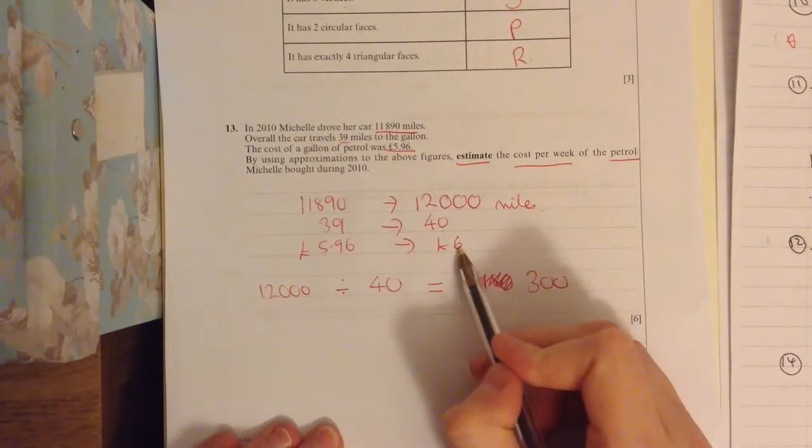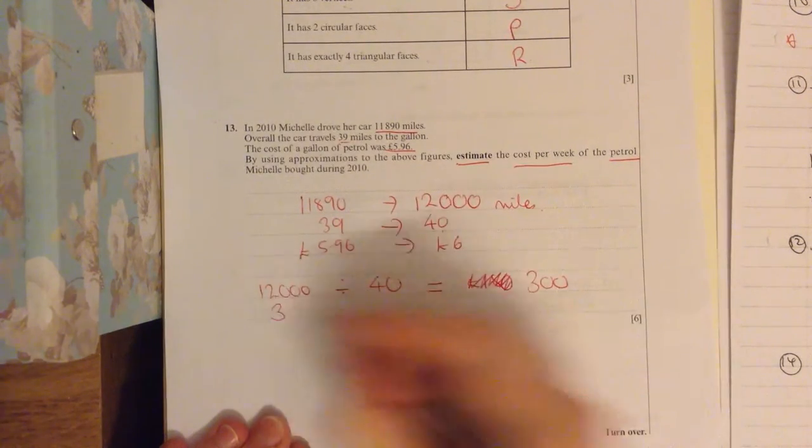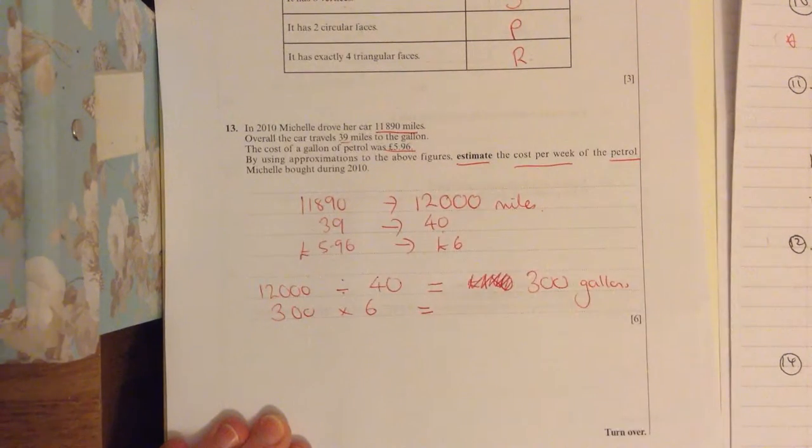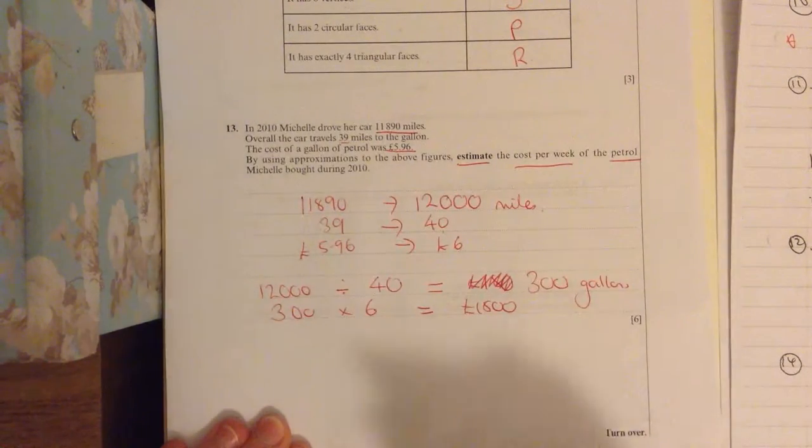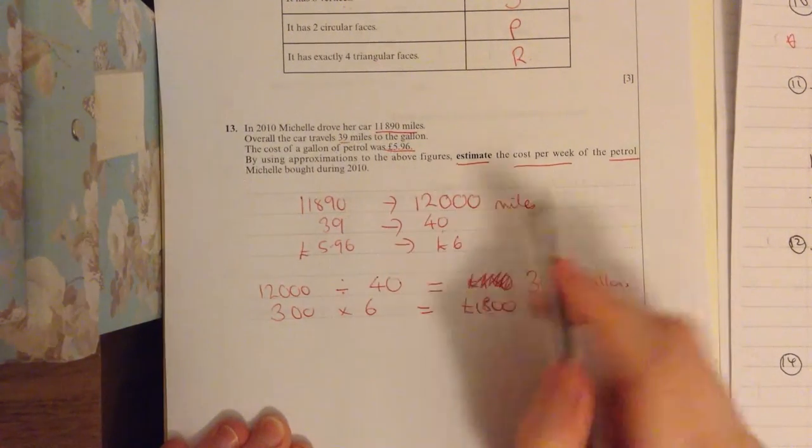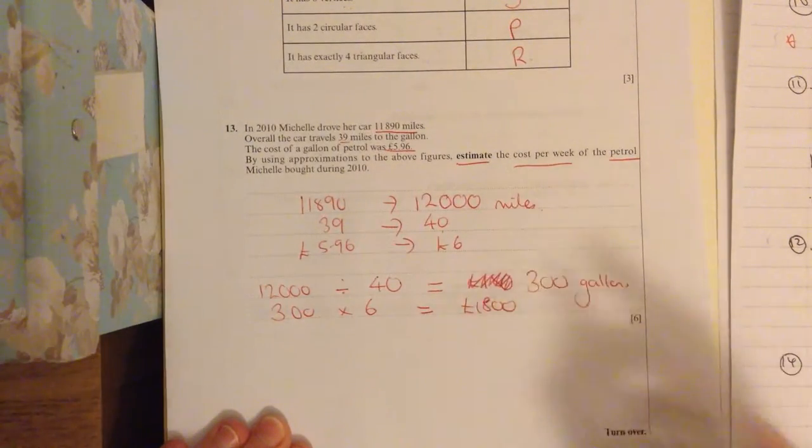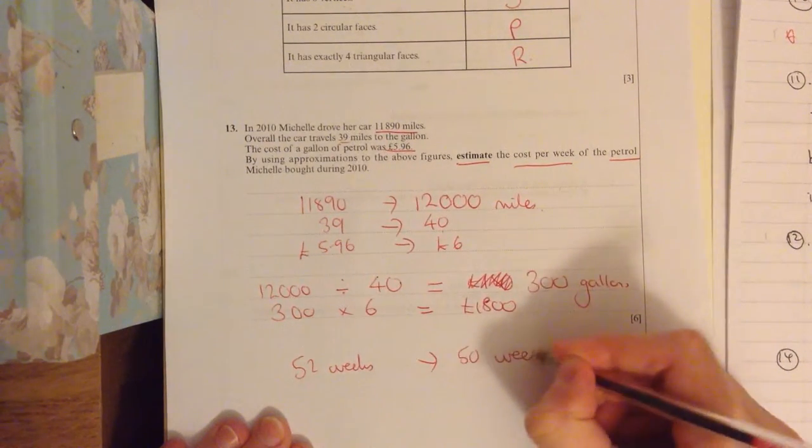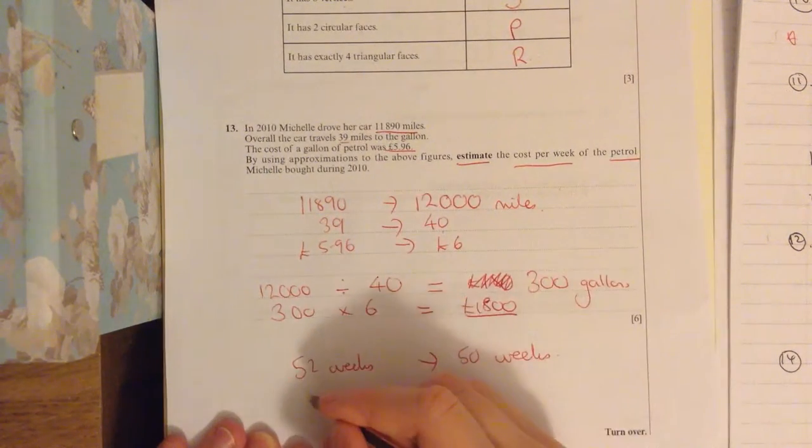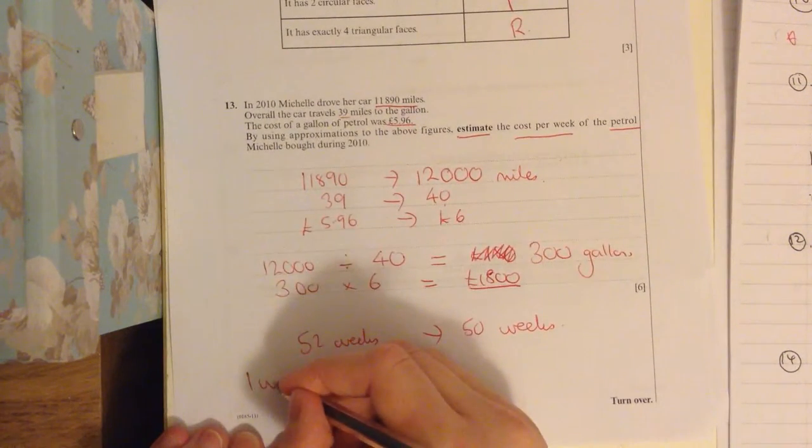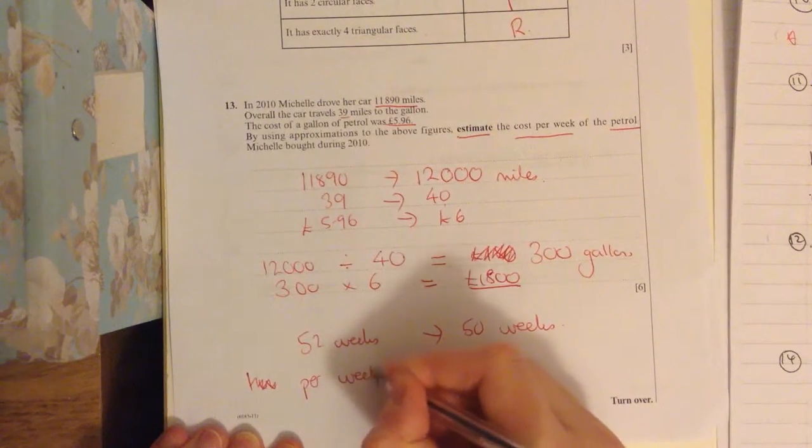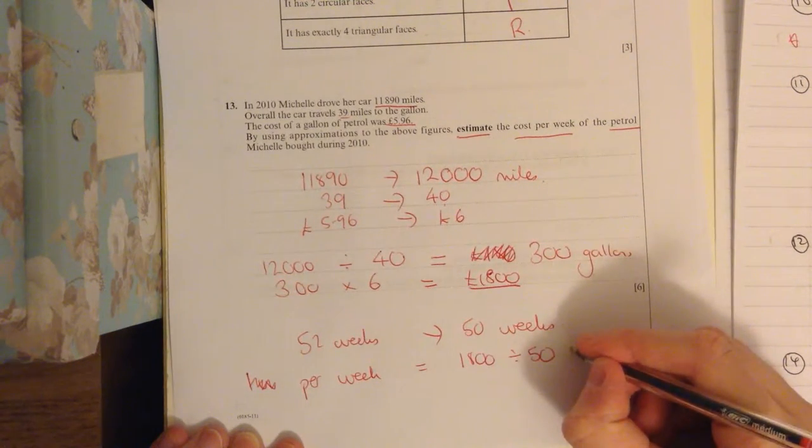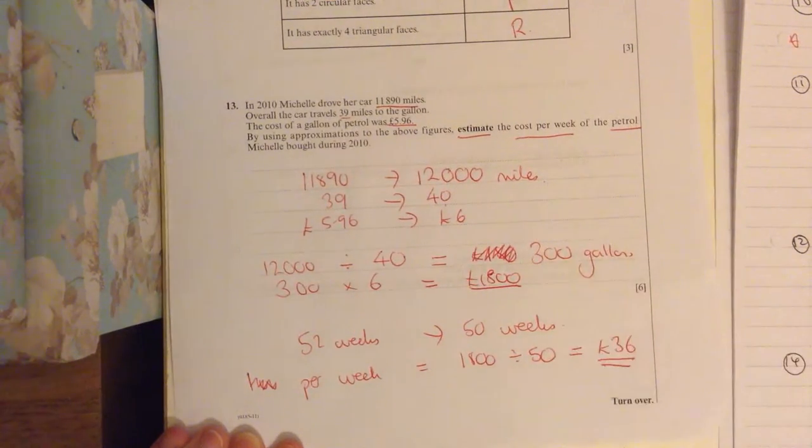Now, the cost per gallon, we estimate it to be 6 pounds. So using 300 gallons, 300 times 6 pounds is going to be 1,800. Now I want to know the cost per week. There are 52 weeks, which we can round to 50 weeks. So the cost per week equals the cost per year divided by the number of weeks, which is 36 pounds per week.